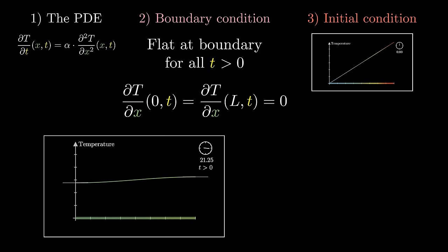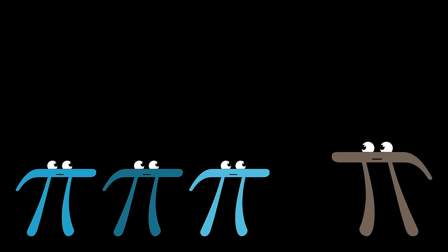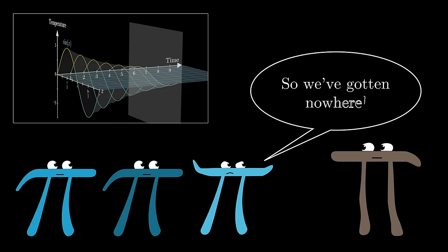Phrased more precisely, the partial derivative with respect to x of our temperature function at (0,t) and at (L,t) must be zero for all times t greater than zero, where L is the length of the rod. This is an example of a boundary condition, and pretty much any time that you have to solve a partial differential equation in practice, there will also be some boundary condition hanging along for the ride, which demands just as much attention as the PDE itself.